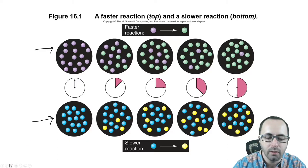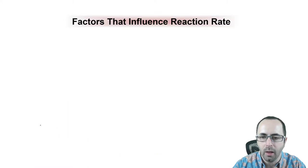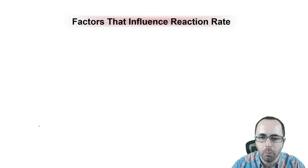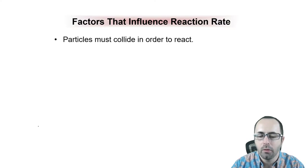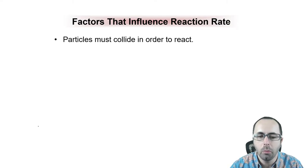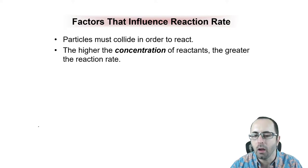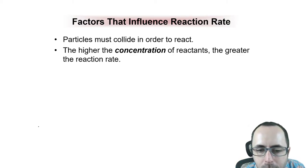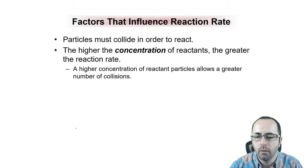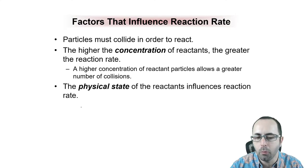We'd like to have a way to describe how quickly or slowly reactions are happening. First, in order for a reaction to happen, particles must hit one another — they must collide. When they collide, that results in old bonds being broken and new bonds being formed. The higher the concentration of the reactants, the more likely they are to collide, and this greater likelihood of collision results in a faster reaction.